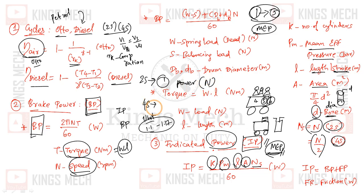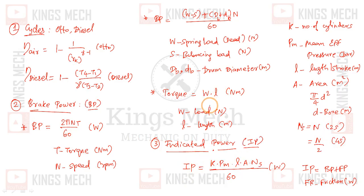For unit conversion, 2 pi NT by 60 is the brake power, and KP LAN by 60 is the indicator power. The efficiency is calculated using these power values.